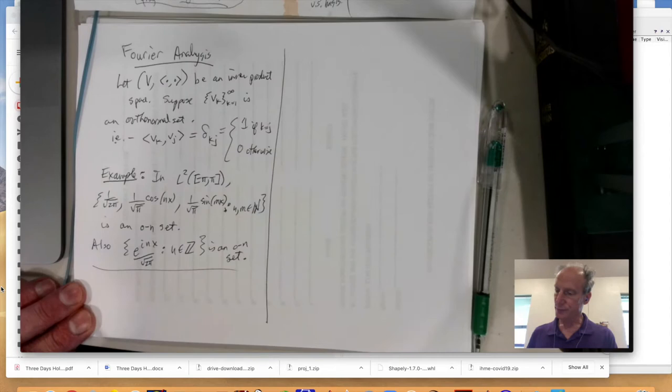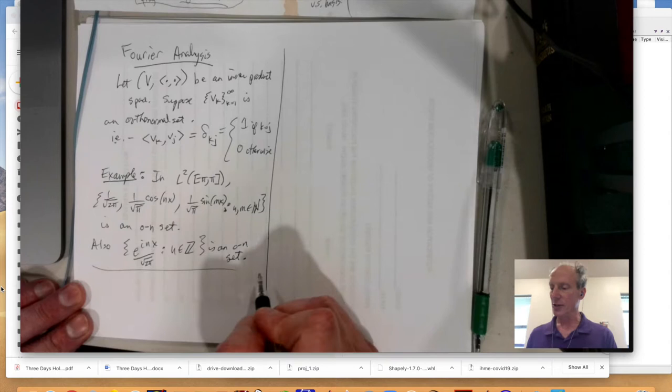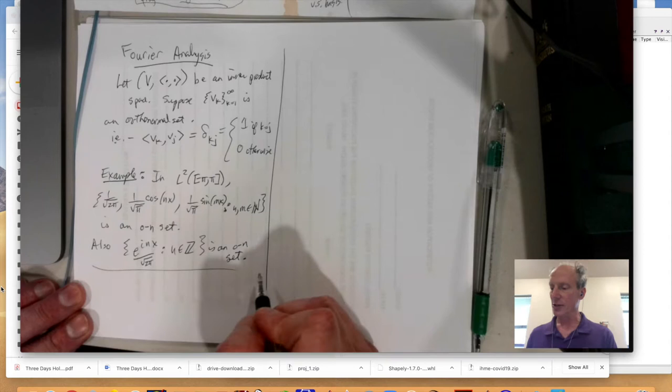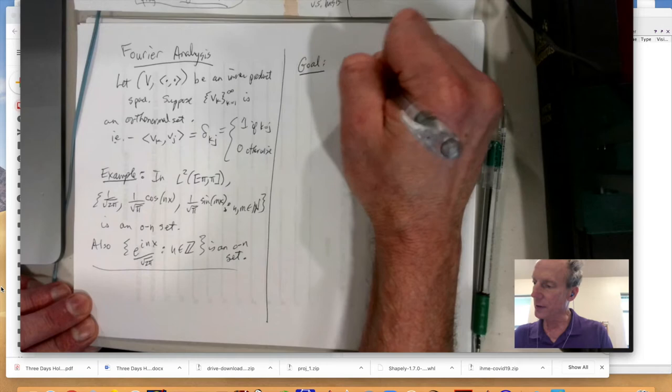So we'll be verifying that in an exercise. So here's a major question. So given such an orthonormal set, can you actually write a function as a linear combination of these things? So with a basis, a finite dimensional basis, you know, you always could do that.